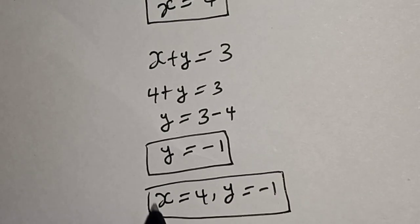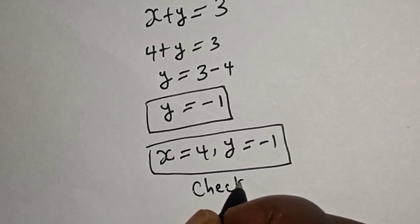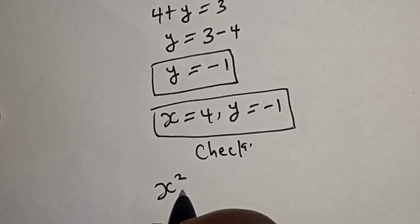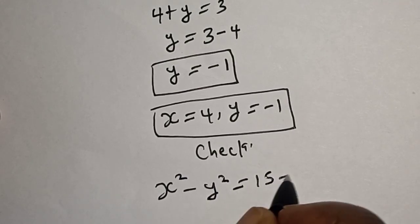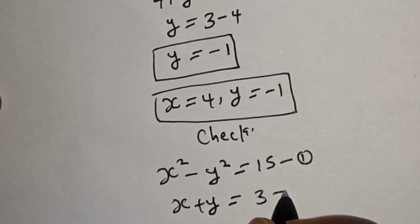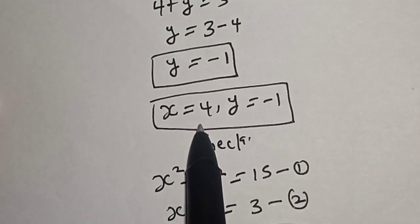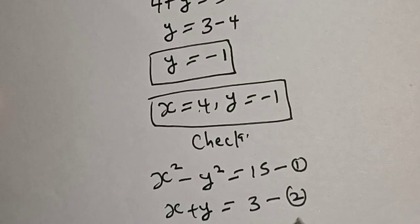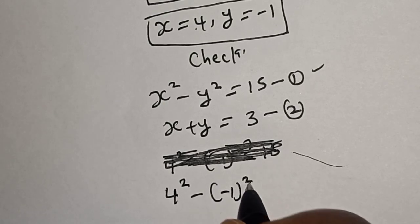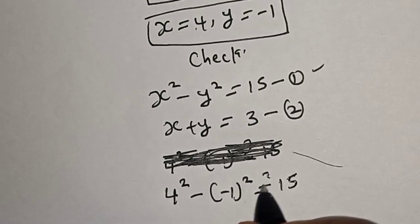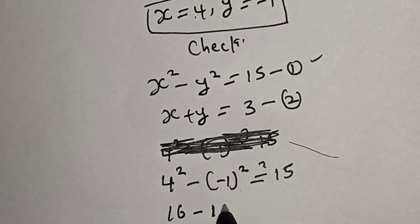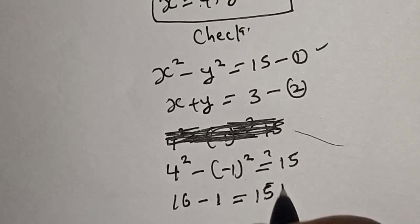We can check to confirm if this answer is correct. The given equations are s squared minus y squared is equal to 15 (equation 1), and s plus y is equal to 3 (equation 2). At s equal to 4 and y equal to minus 1: 4 squared minus (minus 1) squared must equal 15. That is 16 minus 1, which is 15. This confirms equation 1 is satisfied.